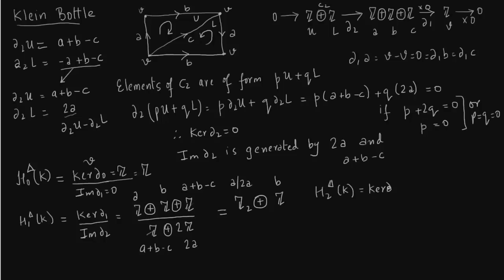So H2 delta K is nothing but kernel of delta 2 because image of delta 3 is 0. So that will just give you 0. So H2 delta K is 0 for i greater or equal to 3.